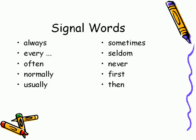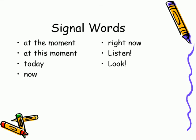Signal words for the simple present: always, every, often, normally, usually, sometimes, seldom, never, first, then. Signal words for the present continuous: at the moment, at this moment, today, now, right now, listen, look.